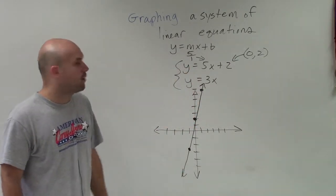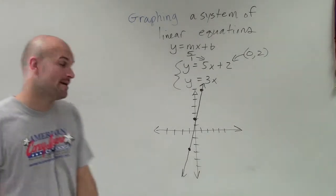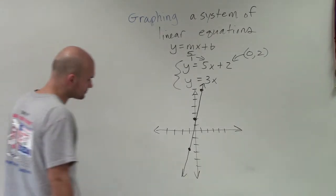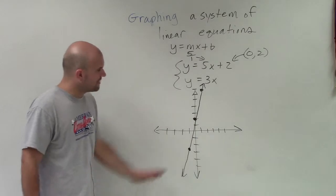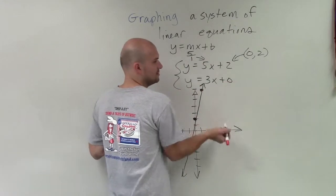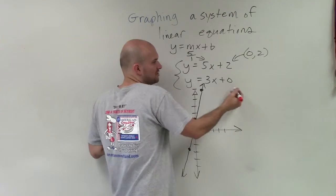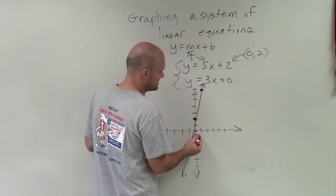Now I'm going to graph y equals 3x. Remember, y equals 3x has a y-intercept of 0, because if you add 0 to 3x, you're still going to have 0. So the y-intercept is at 0.